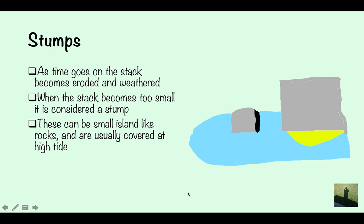And then you're left with the stump. As time goes on, the stack becomes eroded and weathered, and when the stack becomes too small, it's considered a stump. So usually it's about when it's a third of the height of the headland, it's considered a stump. And these can be small island-like rocks, and often they're covered at high tide so you can no longer see them. So this is obviously low tide because you can see it, but at high tide you can't see this stump anymore.